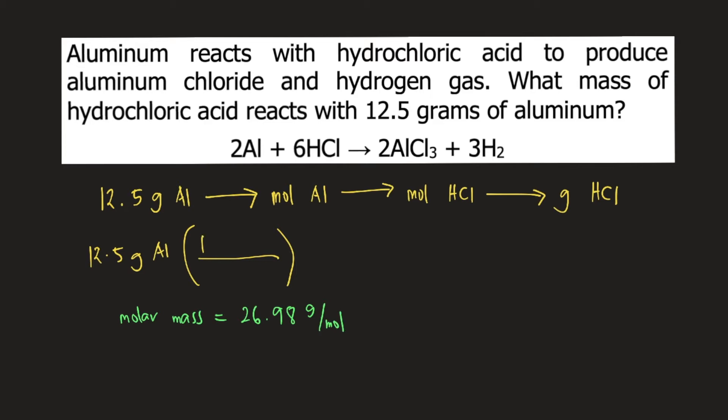One mole of aluminum weighs 26.98 grams of aluminum. Grams of aluminum would cancel, and we have moles of aluminum.